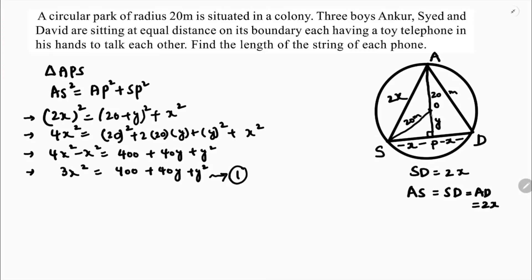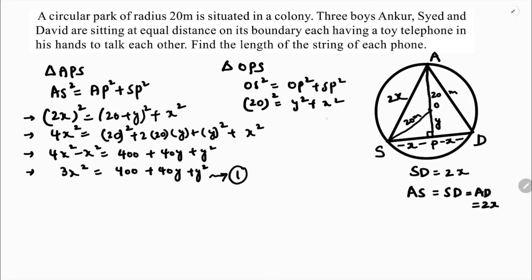Now take the other triangle OPS. In triangle OPS, applying the Pythagorean theorem: OS² equals OP² plus SP². Since the hypotenuse squared equals the sum of the squares of the other two sides, 20² equals Y² plus X², so 400 equals Y² plus X². This is Equation 2.